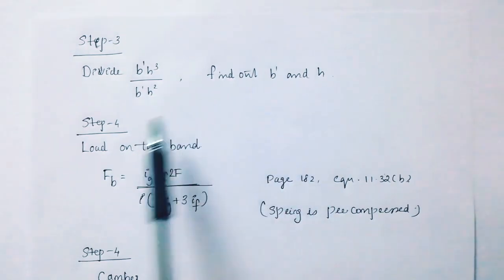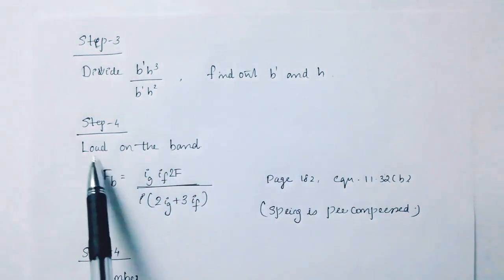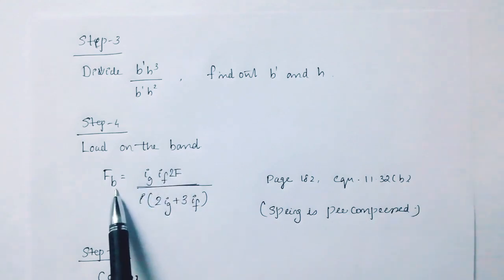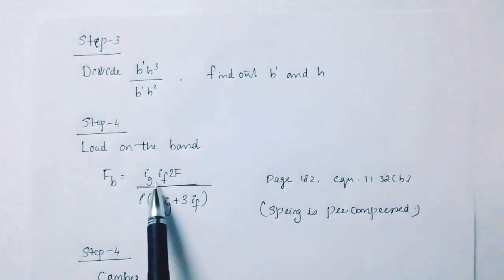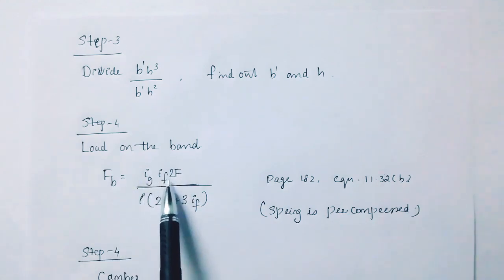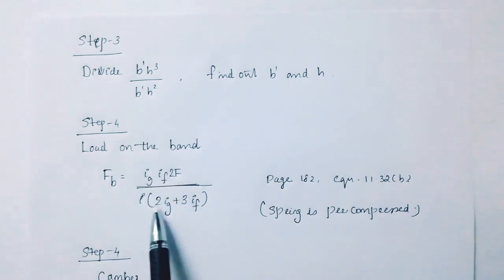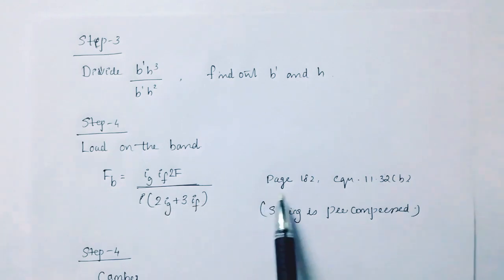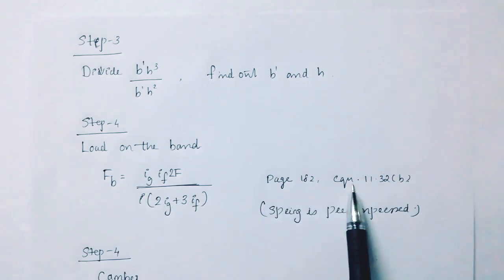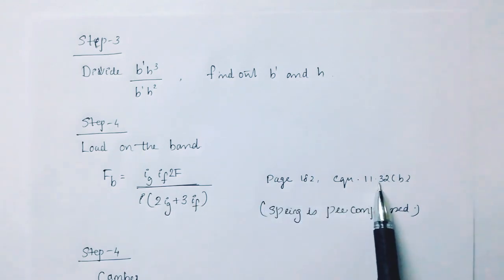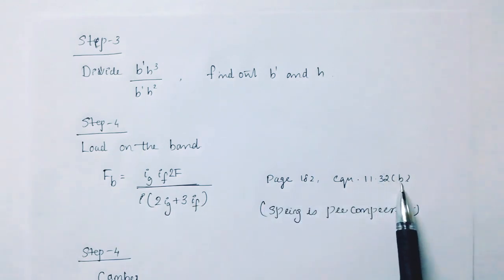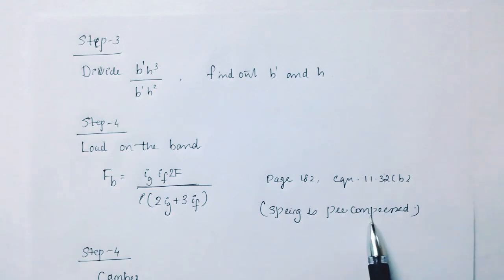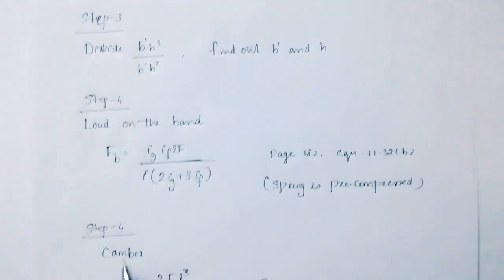Step 4 is to find load on the band. Fb equals ig into if into 2f divided by i into (2ig plus 3if). Page number 192, equation 11.32b. The spring is pre-compressed.